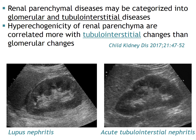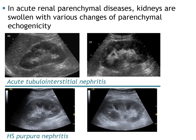Here are two examples of acute renal parenchymal disease. On the left side, lupus nephritis: the kidney is swollen, cortical echo is similar to or slightly lower than liver echo, and there is a small amount of ascites beneath the liver. On the right side, acute tubular interstitial nephritis: the kidney is swollen, cortical echo is lower than liver echo, and corticomedullary differentiation is indistinct. In another case of HS purpura with nephritis, both kidneys are swollen and renal cortical echo is elevated with preserved corticomedullary differentiation. In summary, in acute renal parenchymal disease, kidneys are swollen with various changes of parenchymal echogenicity.